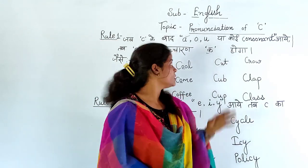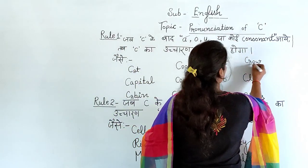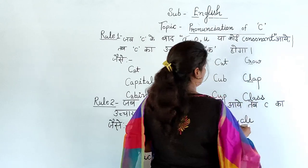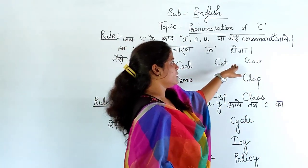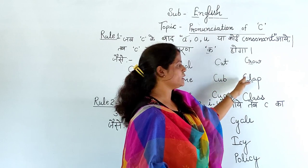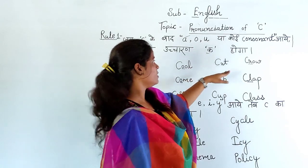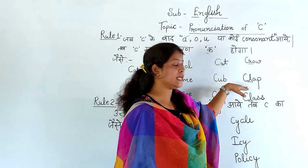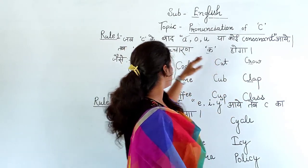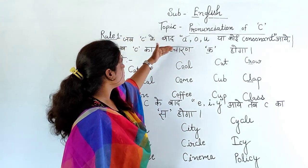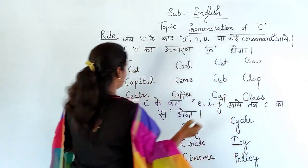And the same rule also says: if any consonant comes after C — leaving out the vowels A, O, U — then also you pronounce C as 'K'. For example, C-R-O-W, Crow; C-L-A-P, Clap; C-L-A-S-S, Class. Here R and L are consonants. Just as I have written the rules, I have also written examples in front of you so there is no problem understanding. Now let us see Rule Number Two.